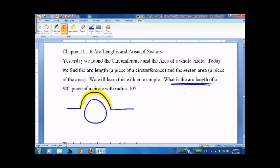90 degree piece of a circle, radius equals 10. So what we want to know is how long is this piece here. If you can see what's going on you'll say well that's easy.